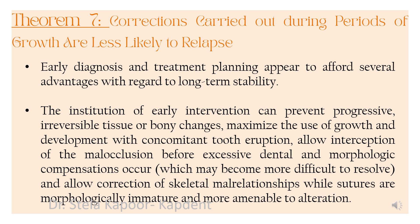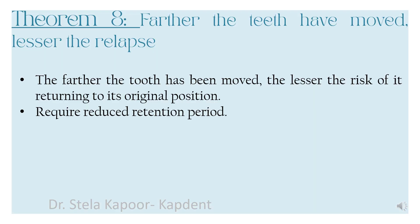The seventh theorem considers early diagnosis and treatment planning, and how it offers several advantages regarding long-term stability. Corrections carried out during the period of growth are less likely to relapse. Any interceptive treatment of malocclusion at earlier stages prevents progressive and irreversible bony changes that are more difficult to resolve. According to the eighth theorem, farther the teeth have moved, lesser the amount of relapse. For example, a canine that was deeply impacted and brought into the arch will have less risk of relapse compared to the correction of a midline diastema or derotation of teeth.